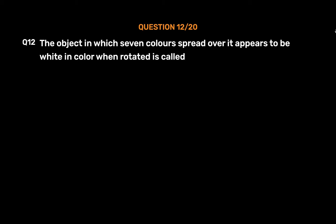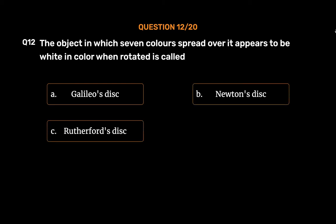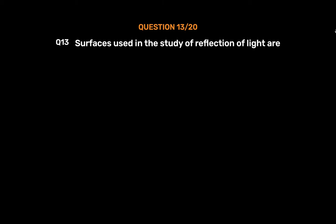Question No. 12: The object in which seven colors spread over it appears to be white in color when rotated is called — Option A: Galileo's Disc, Option B: Newton's Disc, Option C: Rutherford's Disc, Option D: Faraday's Disc. The correct answer is Option B: Newton's Disc.